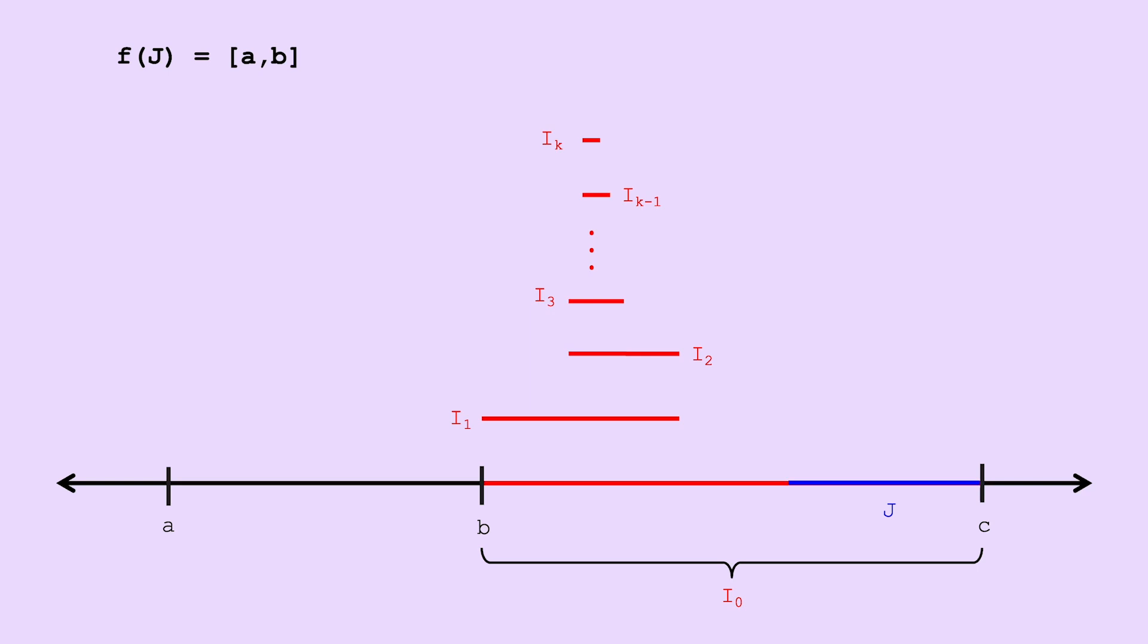So now, pick any k you want, and because f to the k of ik is equal to i0, which contains j, there's some interval j prime in ik, such that f to the k of j prime is equal to j. Therefore, since f of j is equal to ab, we know f to the k plus 1 of j prime is equal to ab. However, we also know f of the interval ab contains bc, which contains j prime. So, f to the k plus 2 of j prime, which is f of ab, contains j prime.